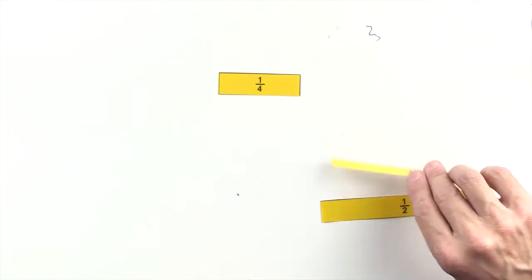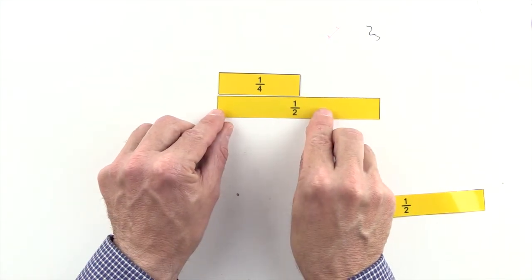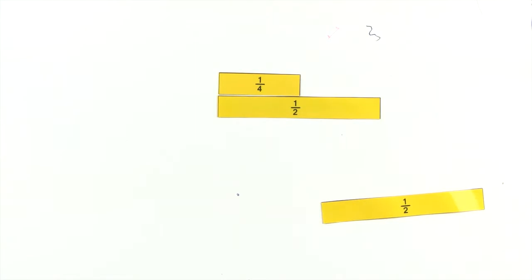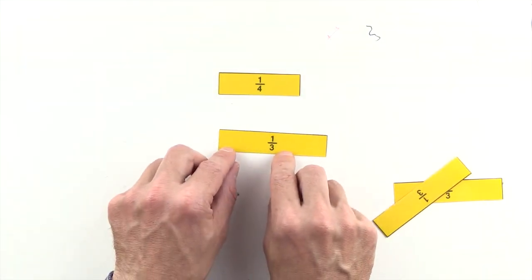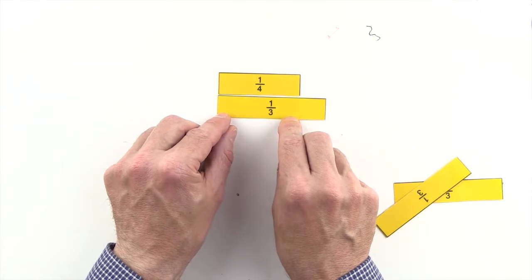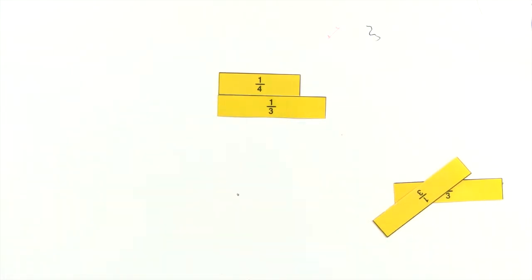One half is greater than one quarter, so we can't make an equivalent fraction to one quarter out of halves. One third is also greater than one quarter, so we can't make an equivalent fraction to one quarter out of thirds.